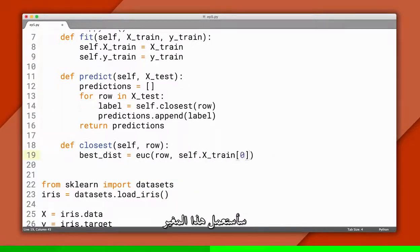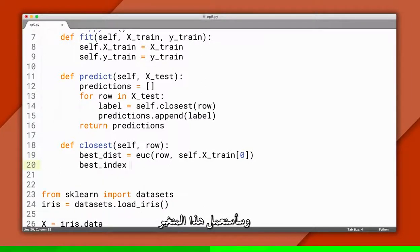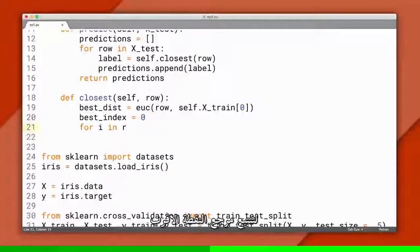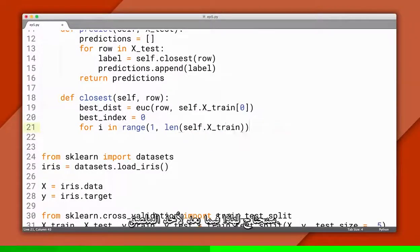I'll use this variable to keep track of the shortest distance we've found so far, and I'll use this variable to keep track of the index of the training point that's closest. We'll need this later to retrieve its label.